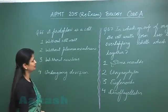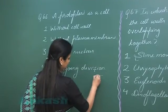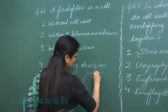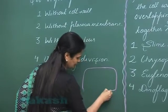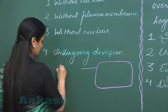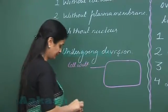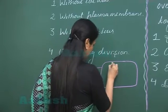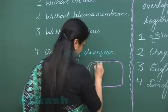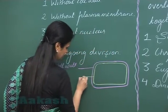Now let's discuss question number 66. If we talk about a plant cell, then this is the outermost covering representing the cell wall. Below the cell wall, there is the presence of plasma membrane.